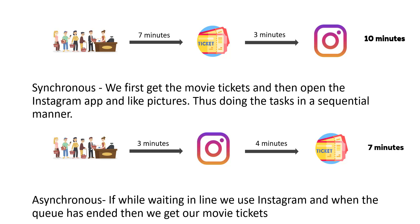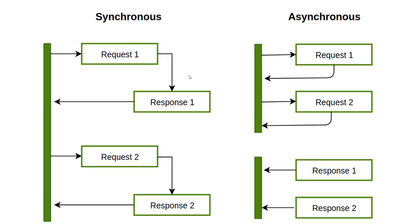To give a more technical example: in synchronous programming, you send request one, wait for the response, complete task one, then do task two. In asynchronous programming, you can send request one and request two without waiting for a response. Whatever response comes first gets handled first — response two might even arrive before response one.